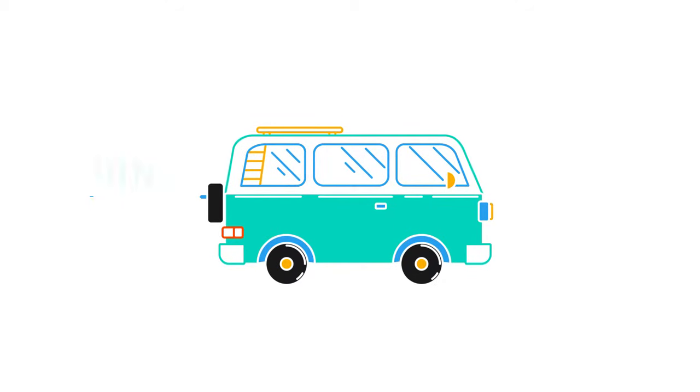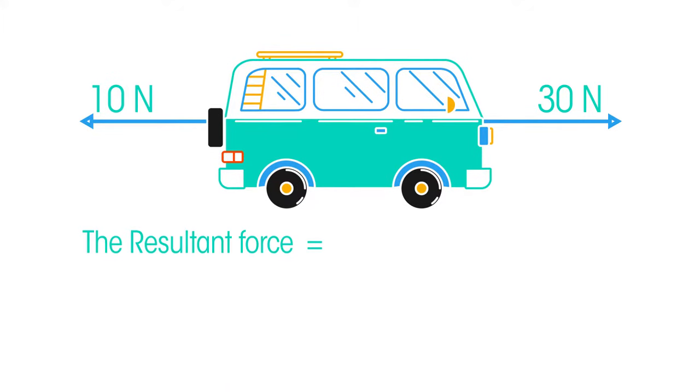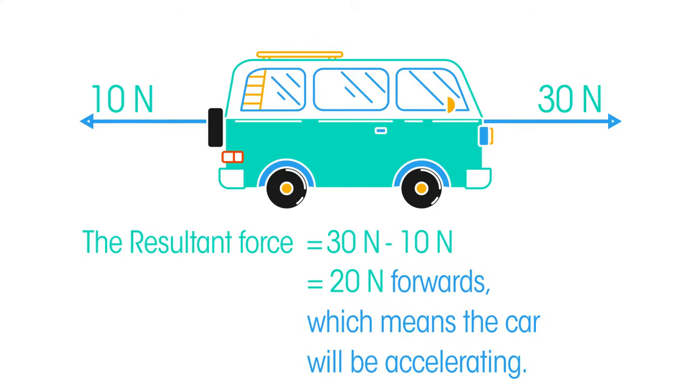For example, look at this car. There is a force of 10 newtons pushing it backwards and a force of 30 newtons driving it forwards. To work out the resultant force, we subtract the smaller force from the larger force. So the resultant force equals 30 newtons minus 10 newtons, which is 20 newtons forwards, which means the car will be accelerating.